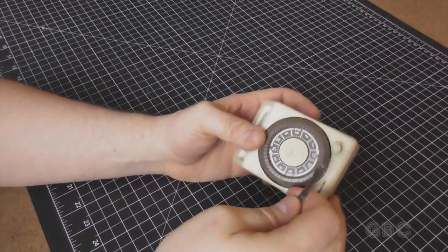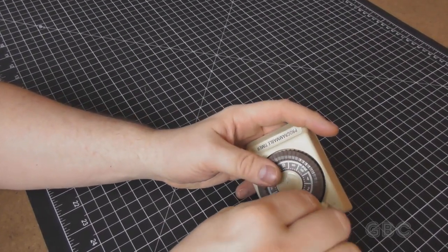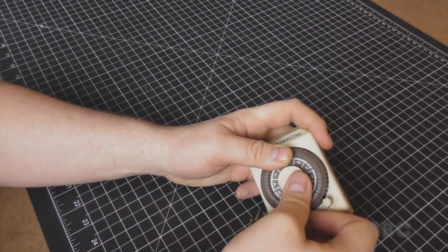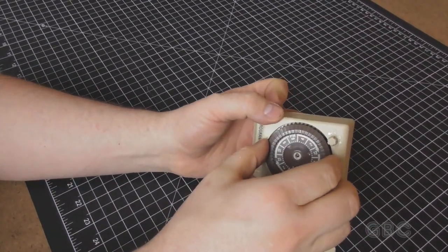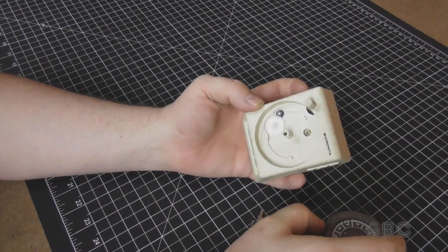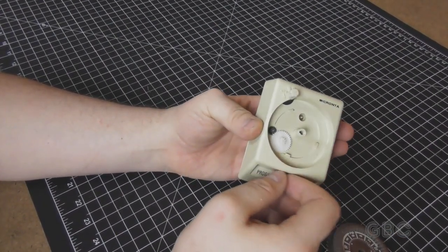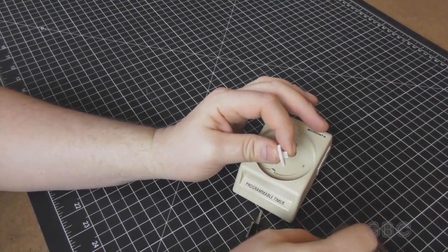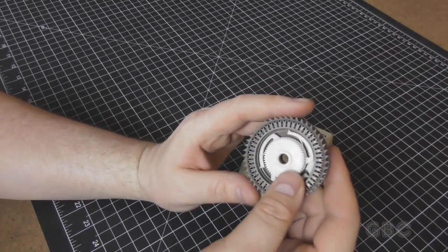On the front I'm going to pry this little panel off. And now the clock wheel should lift right out. And there is another screw down here along with a little gear. So this gear drives the clock wheel.